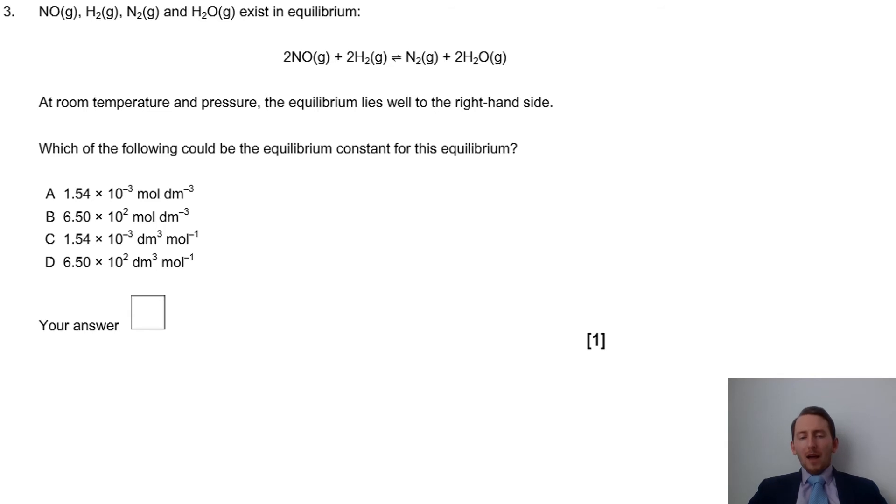Now, one important part of this question, it tells us, is that the equilibrium lies to the right-hand side. That's the key part of that question to underline as you're going through it. Now, because the equilibrium lies to the right-hand side, that means that Kc is going to be greater than 1.